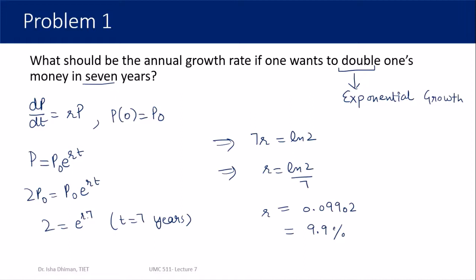So nearly 10% annual growth rate means it will take 7 years to double your money. You can verify this practically — if a bank offers 10% growth rate per year, your money will double in approximately 7 years, provided the interest is compounded. That concludes Problem 1.